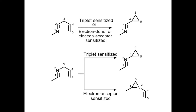In aza-di-pi-methane rearrangement, a nitrogen atom is present at either the first or second position of the 1,4-diene system. The photochemical reaction of 1-aza or 2-aza 1,4-dienes in a triplet excited state gives the corresponding cyclopropyl amines. The third carbon is sp3-hybridized, so it may be 1-aza-di-pi-methane or 2-aza-di-pi-methane. After rearrangement it gives cyclopropyl amine and corresponding aza-di-pi-methane products.